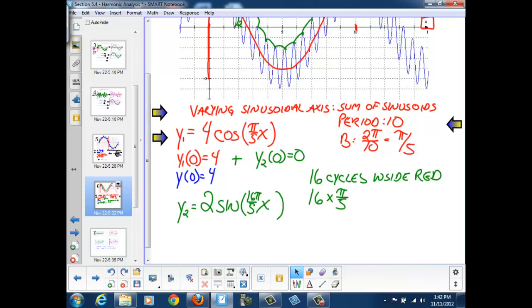Since this is the sum of two sinusoids, my final equation is 4 cosine pi over 5 x plus 2 sine 16 pi over 5 times x.